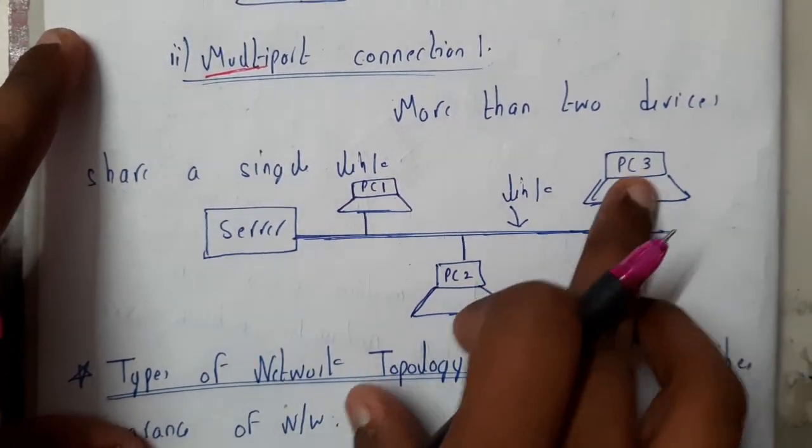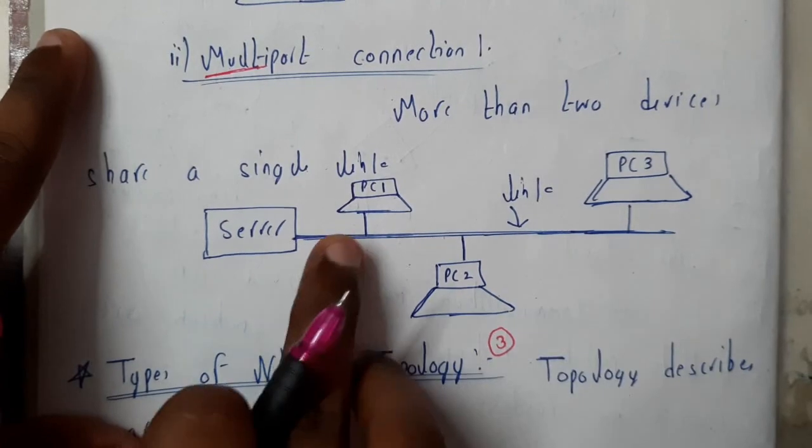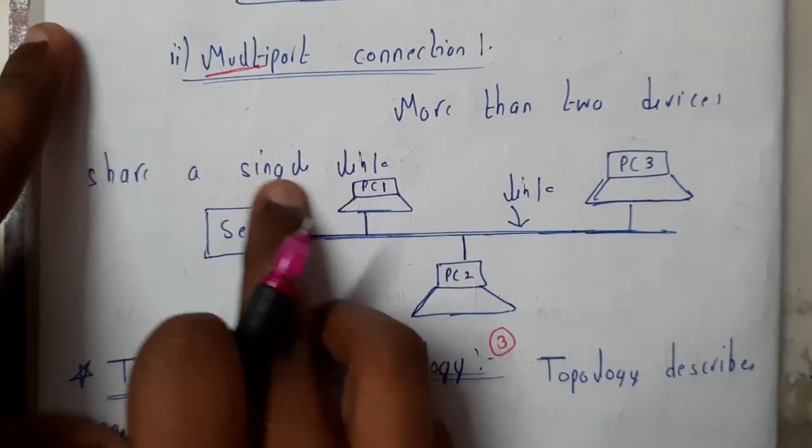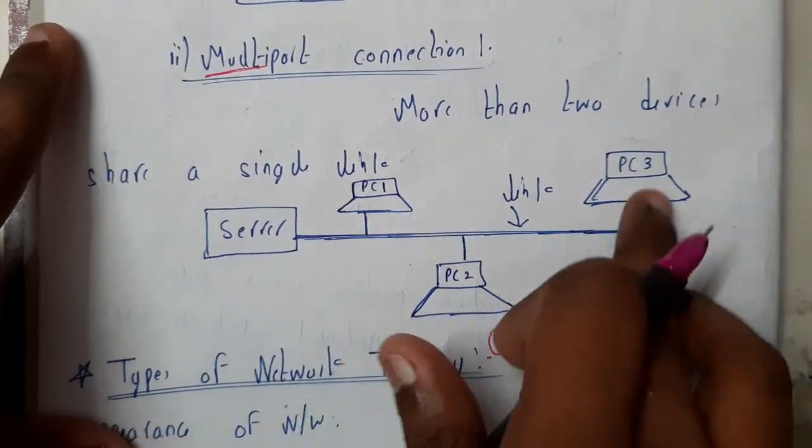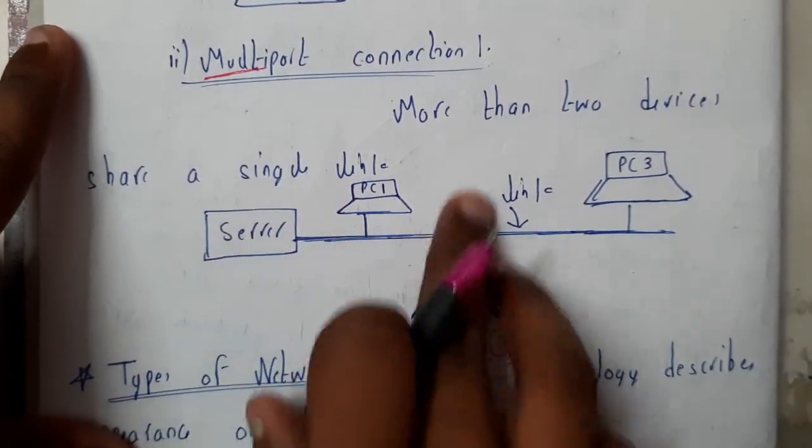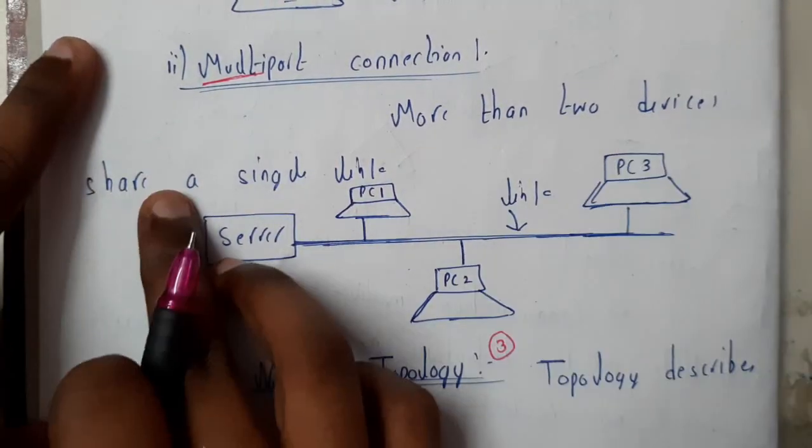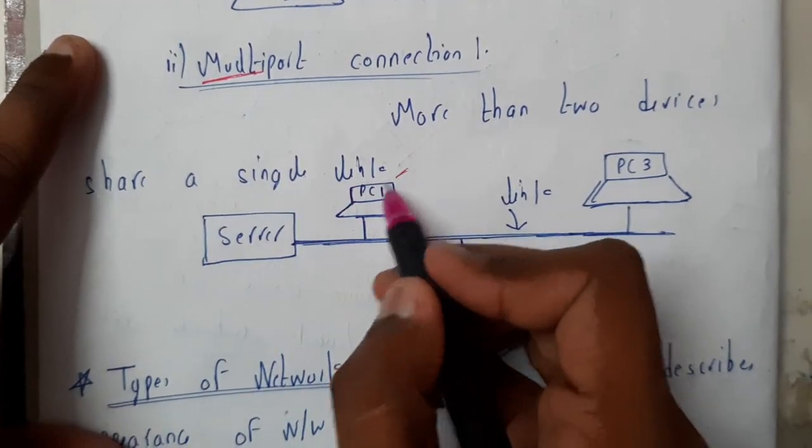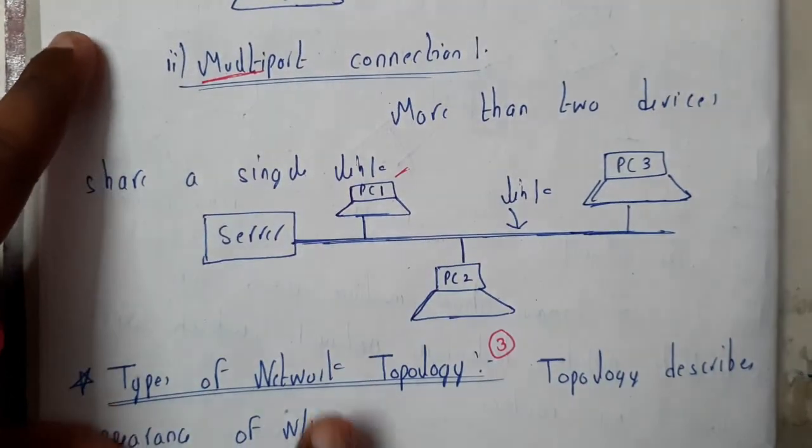PCs: PC1, PC2, PC3, and there is a link which is provided by the server. So here server and these all are the clients. So basically, these guys' requests will be accepted by the server and it returns the result. So more than two devices shared a single link, then it comes under multi-port network.